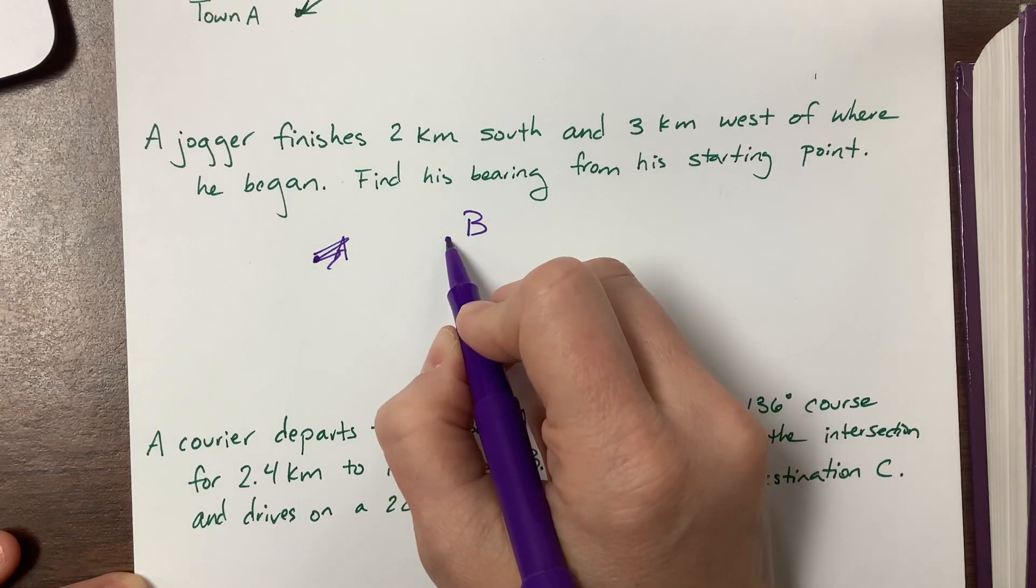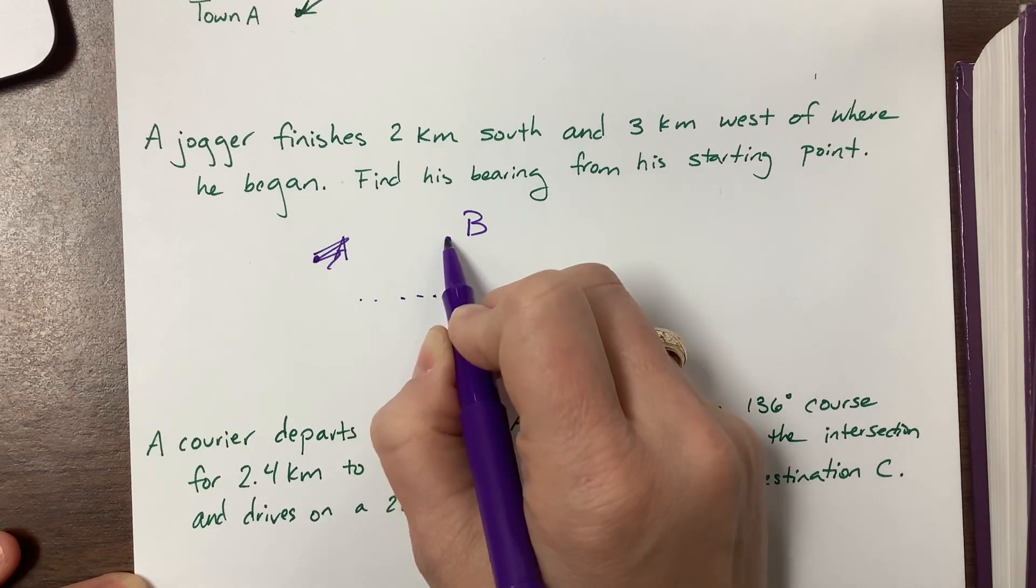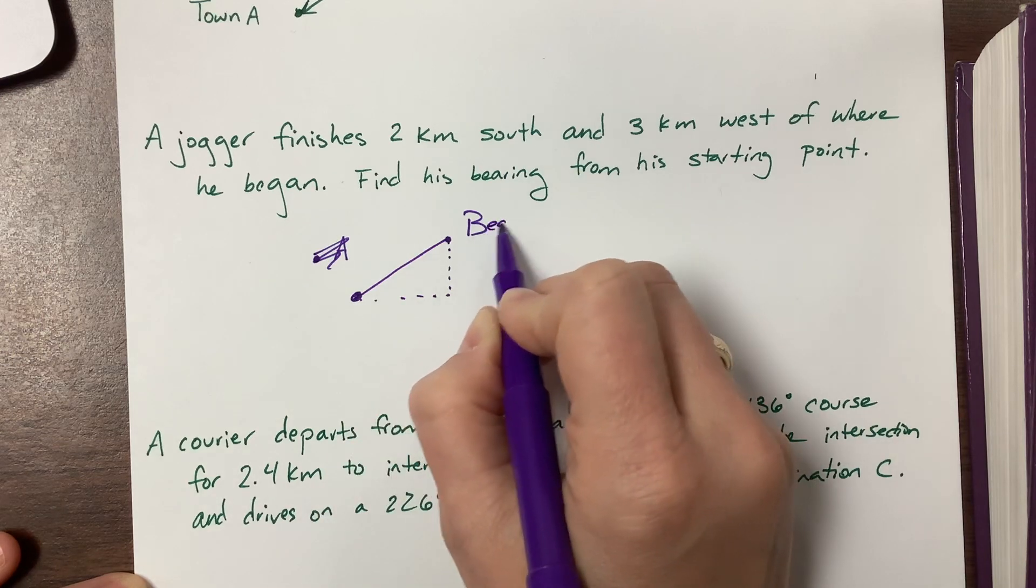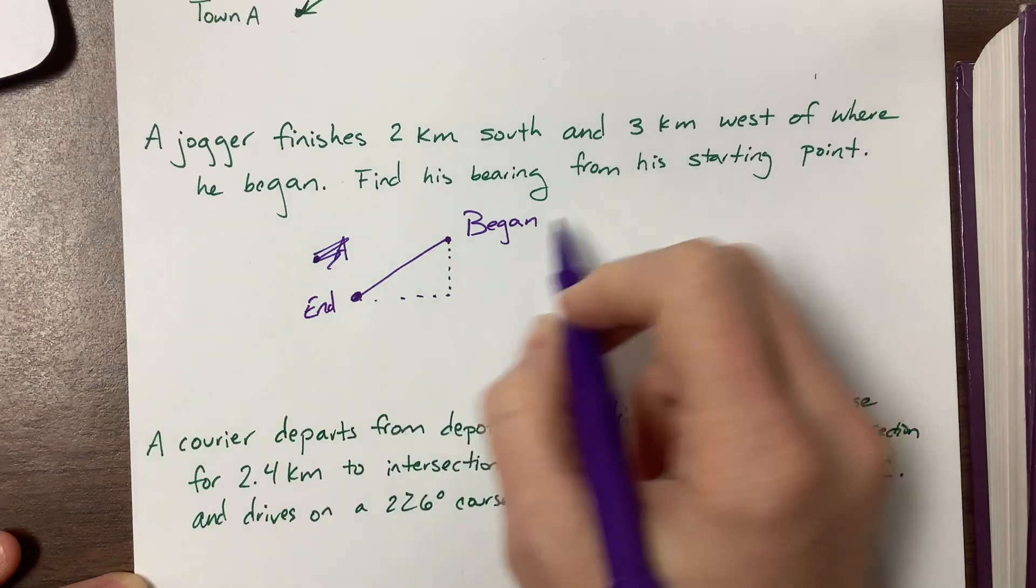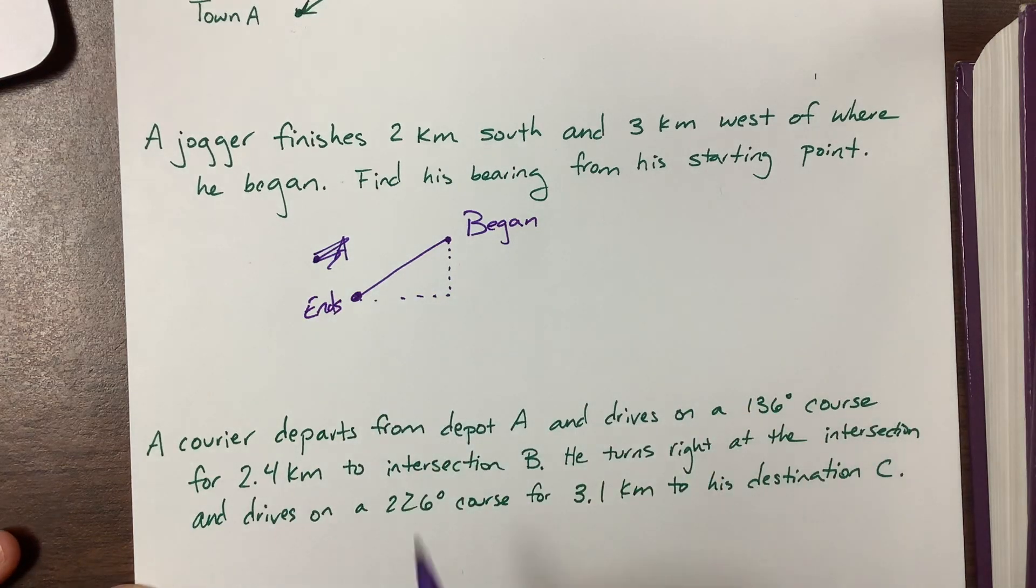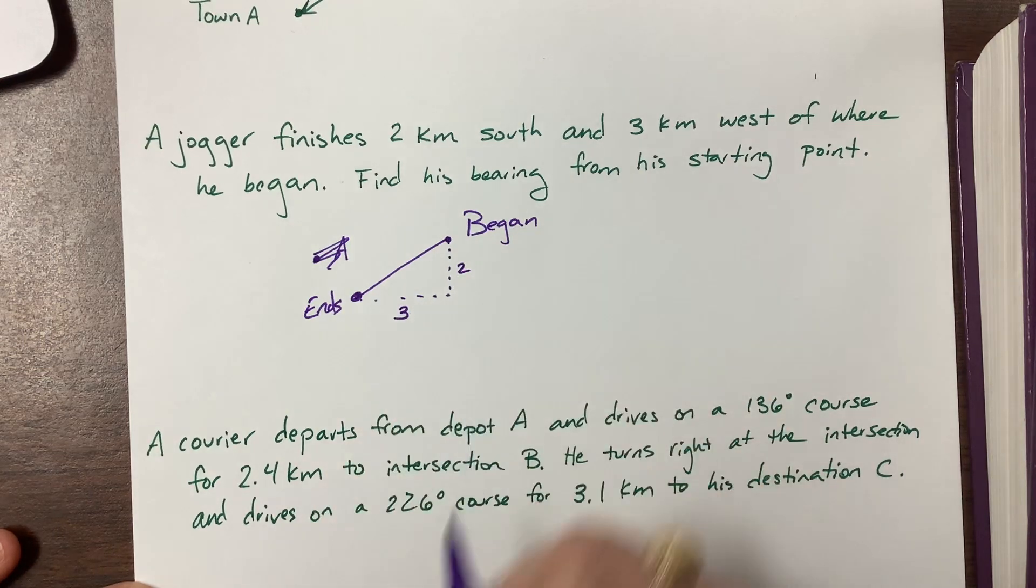So here's that path. This is where he began and this is where he ends. They want to know what's the bearing. This side right here is two, this side length is three. So what I need to do - I should have grabbed my calculator before I started.